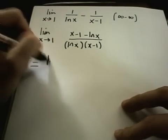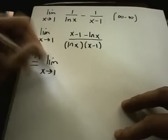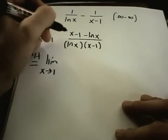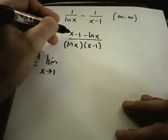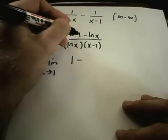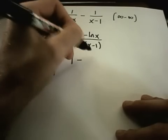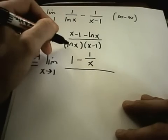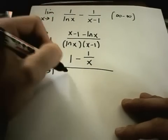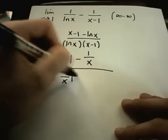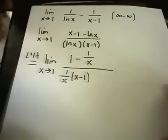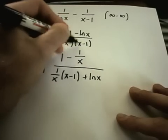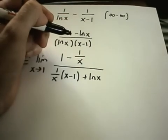This is going to be a little tedious, but that's okay. I'll use L'Hôpital's rule — you can check that plugging in 1 gives 0 over 0. The derivative of the top: the derivative of x is 1, the negative 1 turns into 0, then minus the derivative of ln of x which is 1 over x. On the bottom I need the product rule: derivative of ln of x is 1 over x, times x minus 1, plus ln of x times 1.